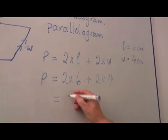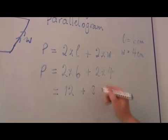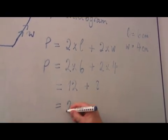That is twelve, two times six, plus two times four is eight. This is twenty.